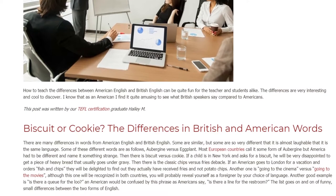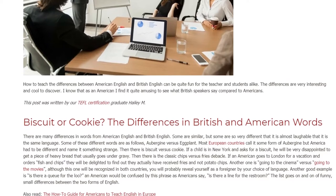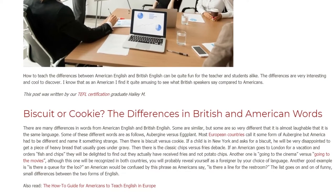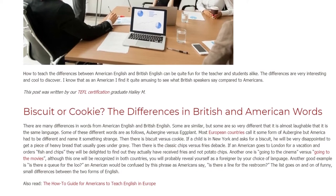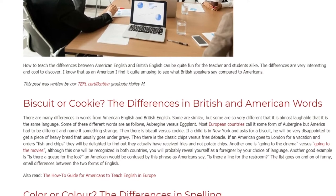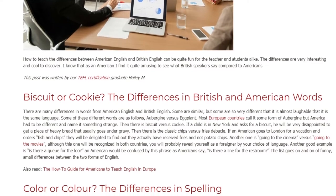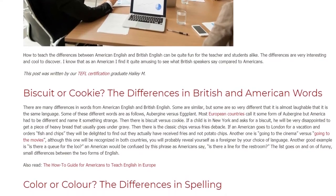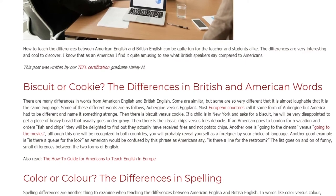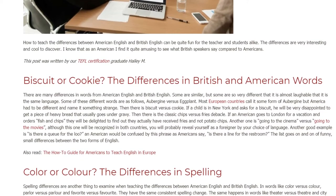Then there is biscuit vs. cookie. If a child is in New York and asks for a biscuit, he will be very disappointed to get a piece of heavy bread that usually goes under gravy. Then there is the classic chips vs. fries debacle. If an American goes to London and orders fish and chips, they will be delighted to find they have actually received fries and not potato chips.